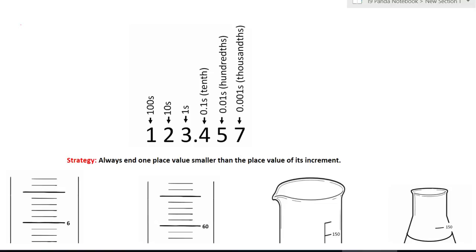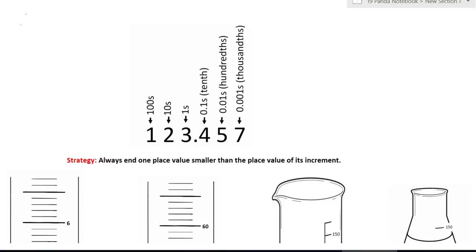In this lesson, we are going to learn how to read measurements of common equipment in a science class. Before we start, you need to know your place values. We have hundredths, tenths, and ones. After the decimal, the number gets smaller than one.